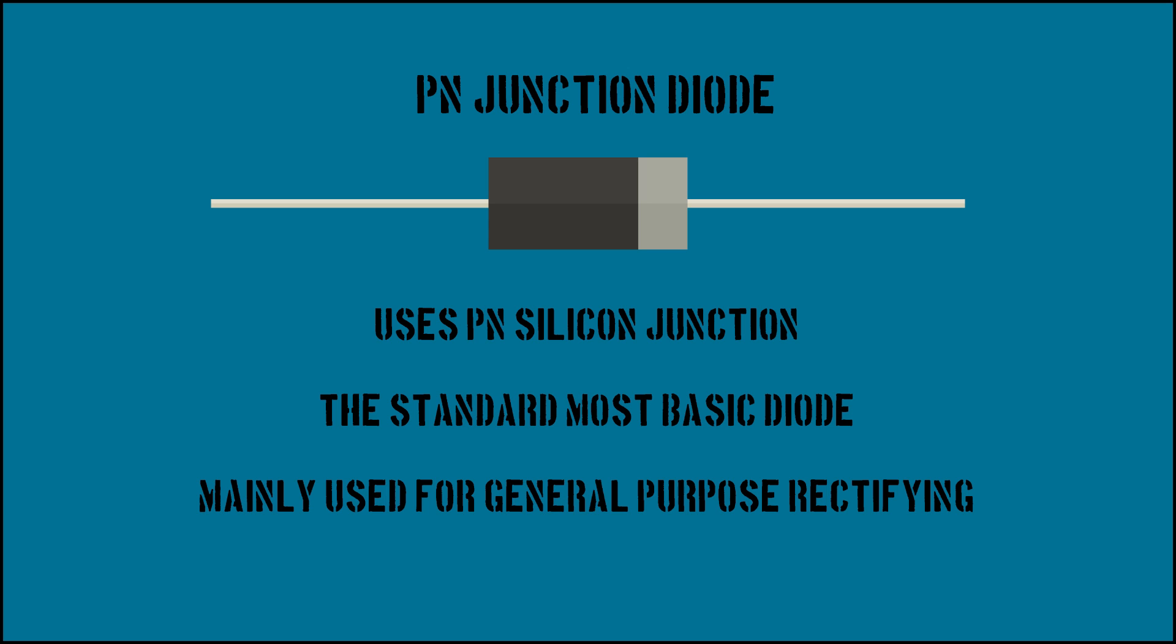PN junction diodes. This diode is thought of as the standard general purpose diode. It uses a PN silicon junction to control the direction of current flow. It is used to rectify currents at different ratings depending on their size.